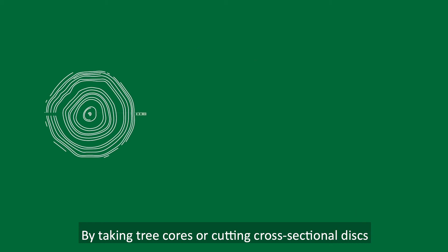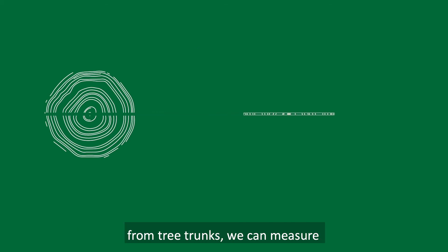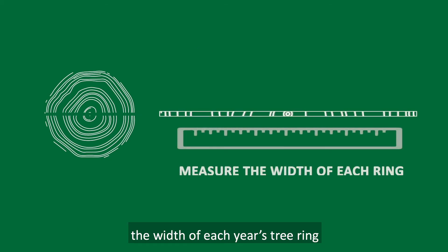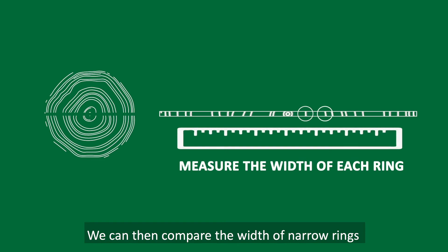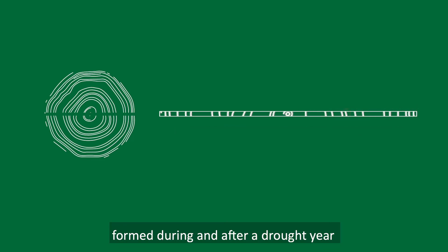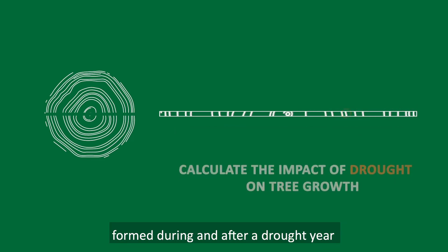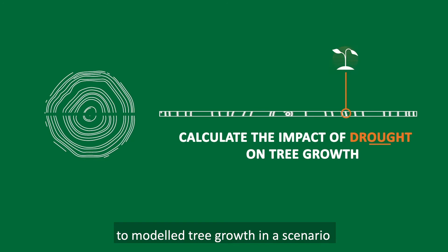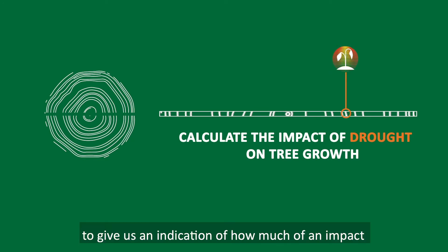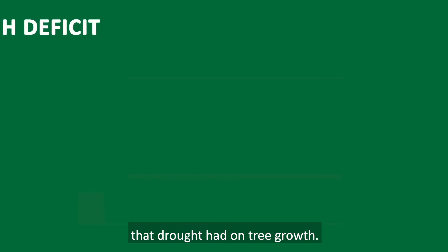By taking tree cores or cutting cross-sectional disks from tree trunks, we can measure the width of each year's tree ring. We can then compare the width of narrow rings formed during and after a drought year to modelled tree growth in a scenario where no drought occurred, to give us an indication of how much of an impact that drought had on tree growth.